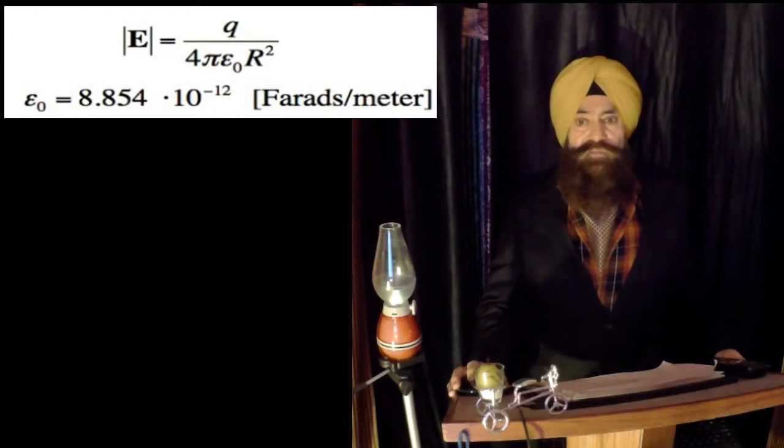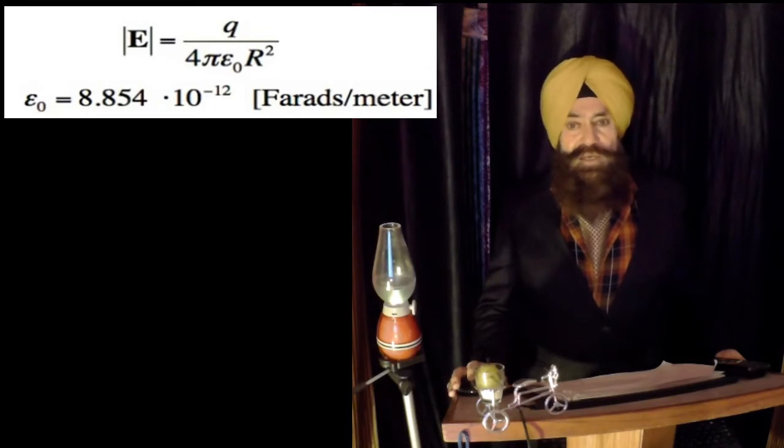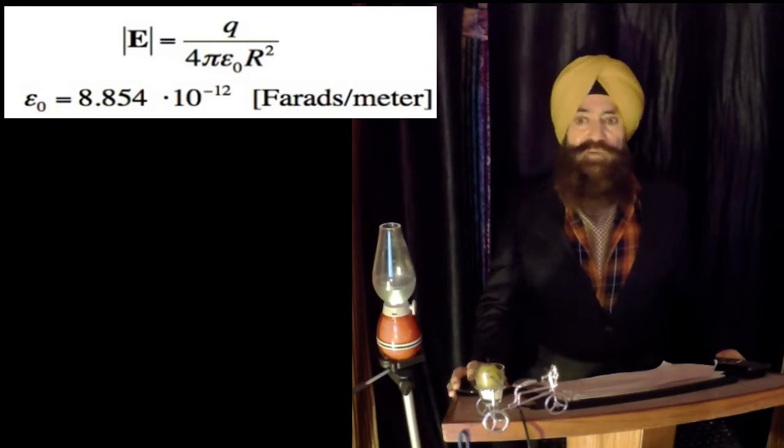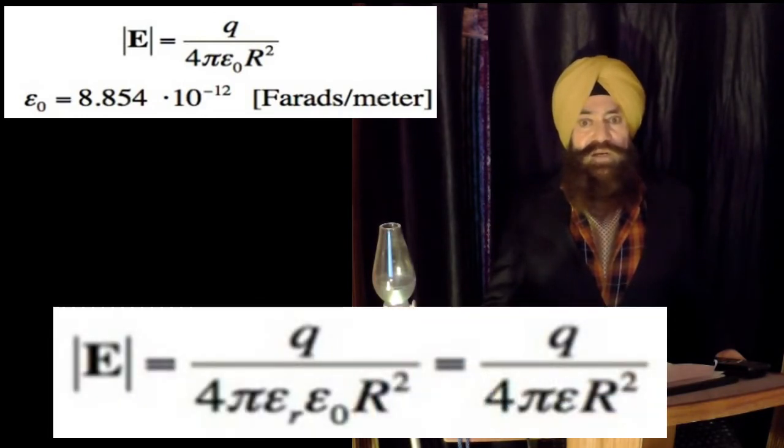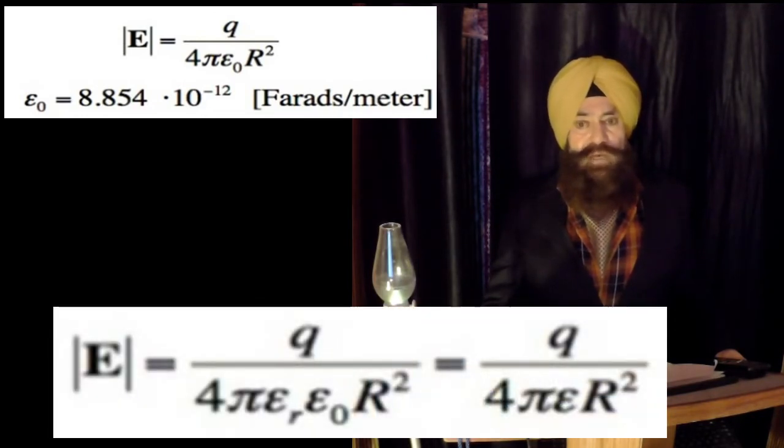So this is the permittivity of a vacuum. In general, electrical field due to a point charge will be reduced due to the molecules within the material. If there are molecules within the material, then electrical field or the force will be reduced, as I just explained. And then we write the electrical field is 1 over 4 pi epsilon 0 epsilon r q by r square. Or epsilon 0 epsilon r is called epsilon, the absolute permittivity. Epsilon r is called relative permittivity.